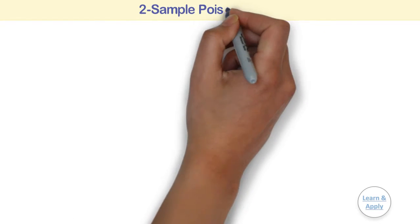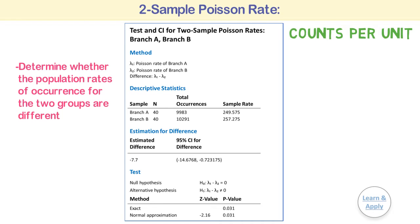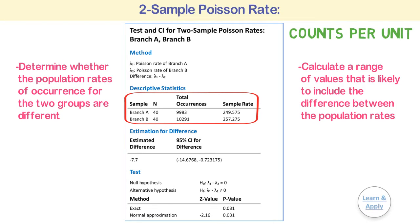Two-sample Poisson rate. Use two-sample Poisson rate when your data is count per unit to determine whether the population rate of occurrences for the two groups are different and to calculate a range of values that is likely to include the difference between the population rates.